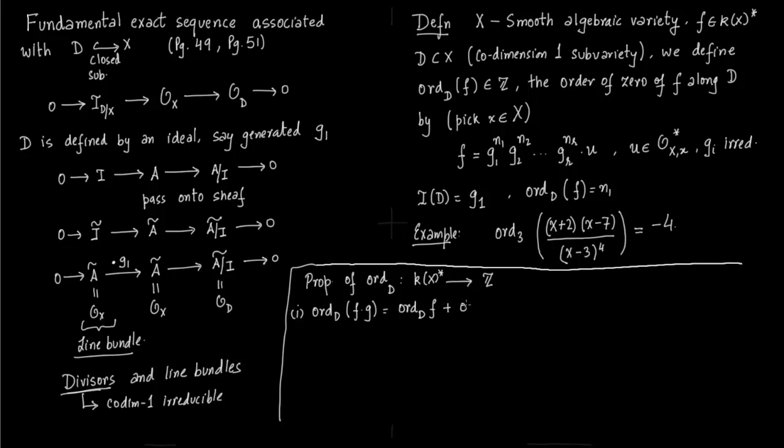Order of f times g is order of f plus order of g. Now fix f in K(X)*. Then there are only finitely many codimension 1 subvarieties D in X with order not equal to 0.